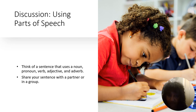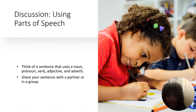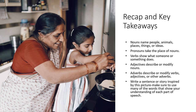Let's take a little break. I'd like you to think of a sentence that uses a noun, a pronoun, a verb, an adjective, and an adverb, then share that sentence with a partner or a group. If your teacher allows, maybe you can work with your partner to come up with this sentence. Now write a sentence or a story inspired by this picture, making sure to use many of the words that show your understanding of each one of these parts of speech. I can't wait to hear how your stories come together. Thanks so much for stopping by, and if you like these types of videos, make sure to like and subscribe.